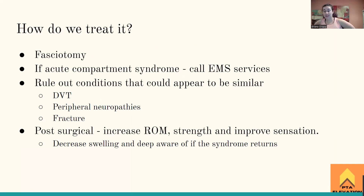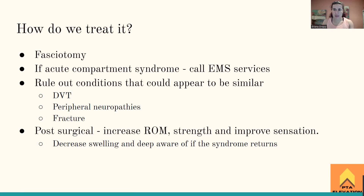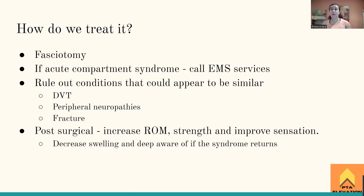For acute compartment syndrome, we call EMS and get the patient to the hospital. There, they'll perform a fasciotomy — cutting through the fascia of the muscle to open everything up, allow the swelling to decrease, so the nerves are no longer compressed. If it keeps swelling without intervention, the patient could lose their leg. Our role as clinicians is to recognize this and differentiate it from a DVT, peripheral neuropathy, or fracture.